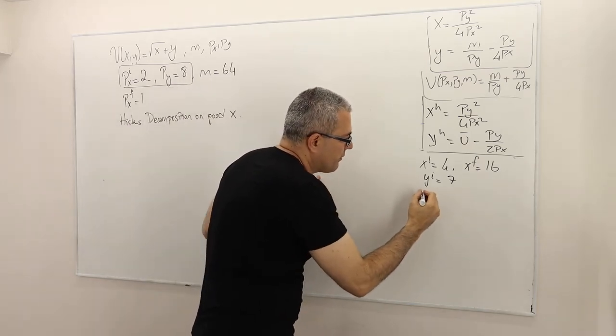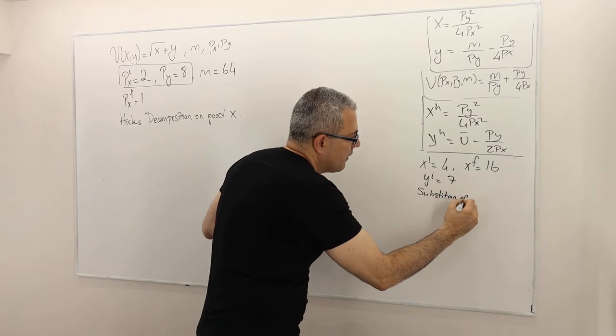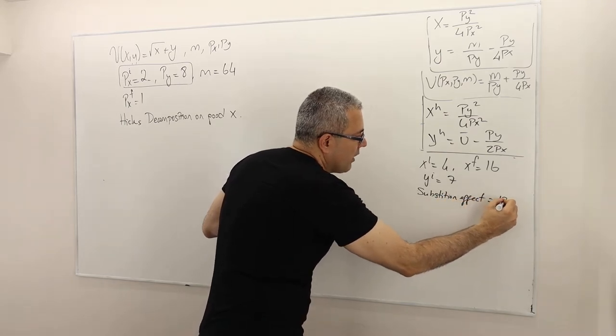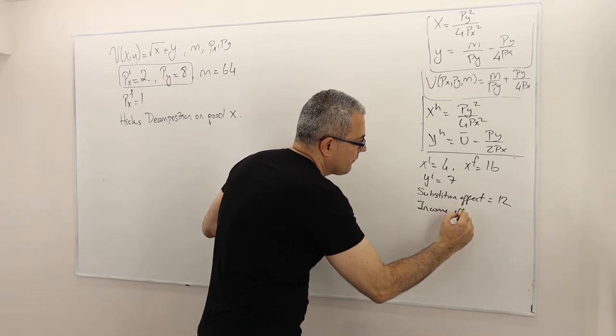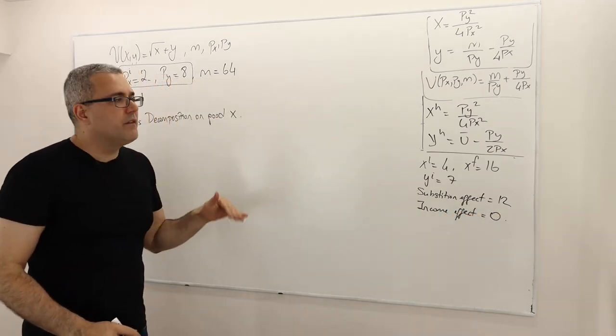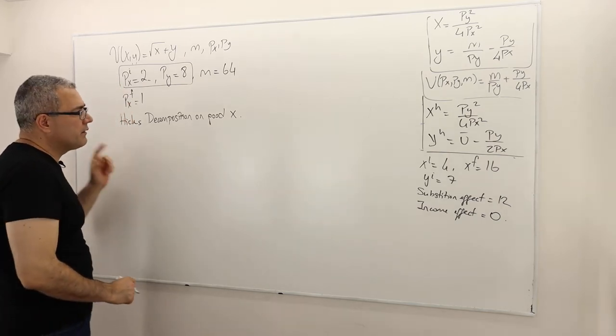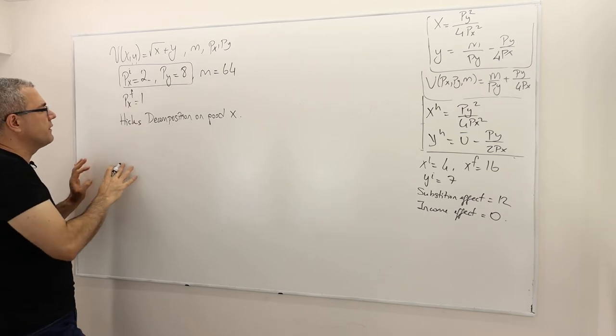And here, if you remember, the substitution effect size was 12. Income effect was 0. I believe it's going to be the same for the Hicks. But our approach is going to be different.